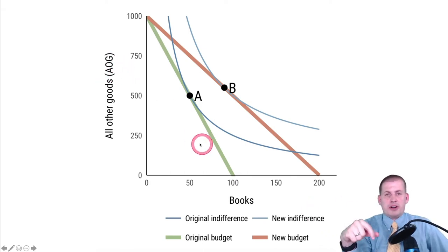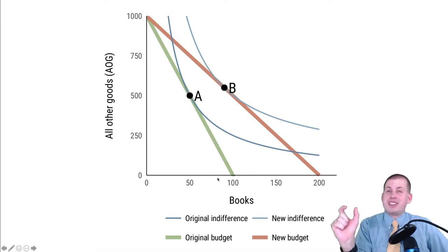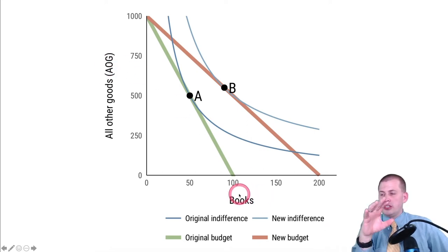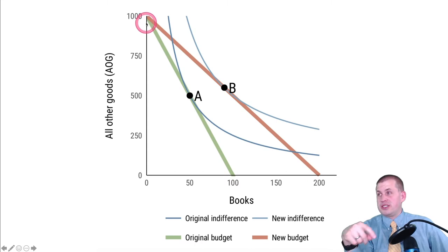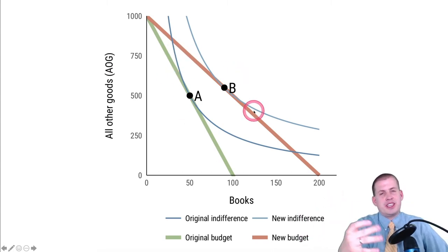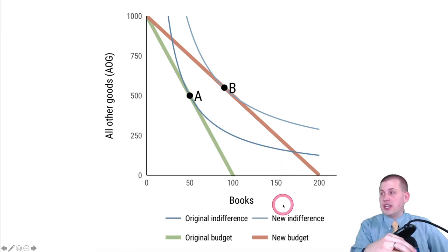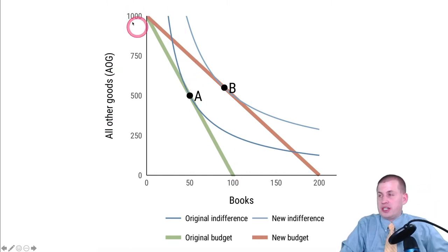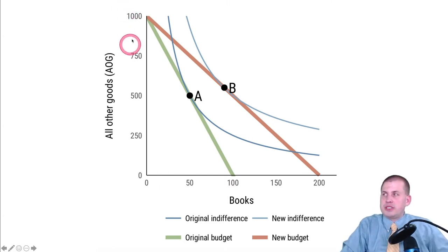So the decision is: you could spend all your money on books, or spend no money on books and spend all your money on all other goods — AOG. It's a shortcut way of thinking about this — one good versus anything else. This is our original budget line where you could spend all your money and buy 100 books, or spend all your money on other things and get 1,000 other things, or some amount in between. The actual numbers don't matter.